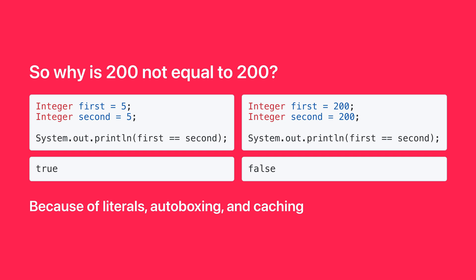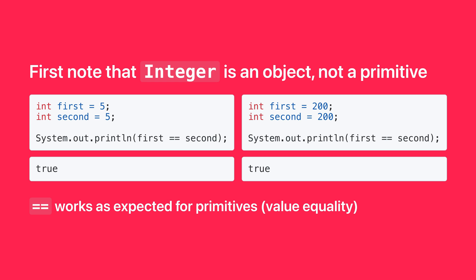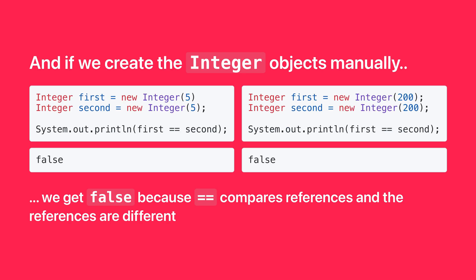So why is 200 not equal to 200? Because of literals, autoboxing, and caching. First, know that big-I Integer is an object, not a primitive. Double equals works as expected for primitives. And if we create the Integer objects manually, we get false because double equals compares references, and the references are different.